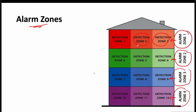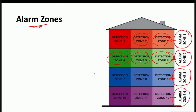A floor can have more than one detection zone or detection area, but for alarm zones, the entire floor should be one alarm zone — even though the floor may have more than one detection zone. This concludes the topic of alarm and detection zones in fire alarm design.